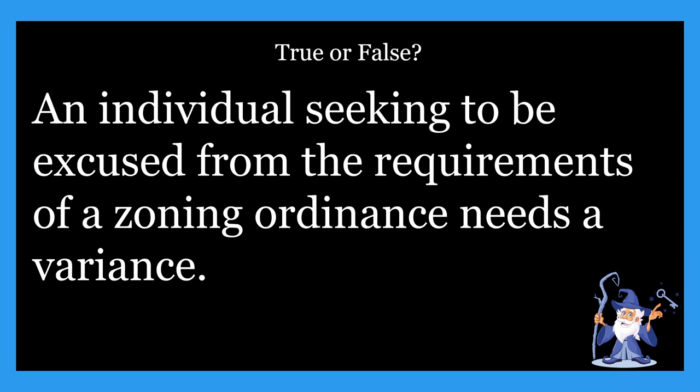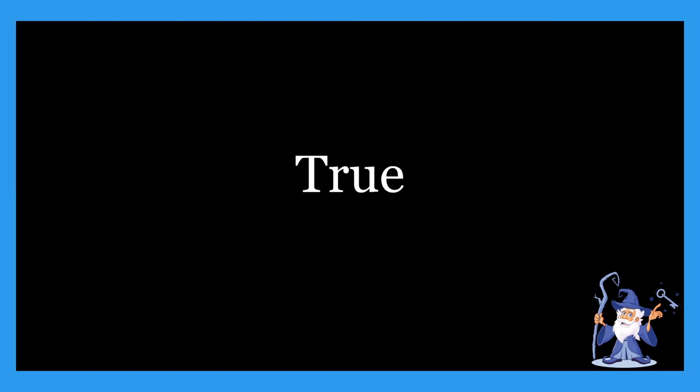Next one: an individual seeking to be excused from the requirements of a zoning ordinance needs a variance. Is that true or false? Hopefully the answer is true — it is true. The statement is very similar to the definition. An individual seeking to be excused from the requirements of a zoning ordinance needs a variance, which is pretty much exactly what the information given says. That statement is true.